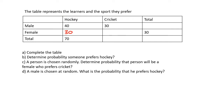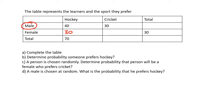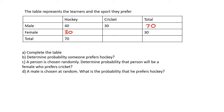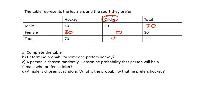Now, if you look at the males going this way, there are 40 who play hockey and 30 who play cricket, so the total would be 70 males. Now, for the females, there is a total of 30 people. So there must be zero females who play cricket, so that this row adds up to 30. For cricket going down, there are 30 people altogether — 30 plus zero is 30.